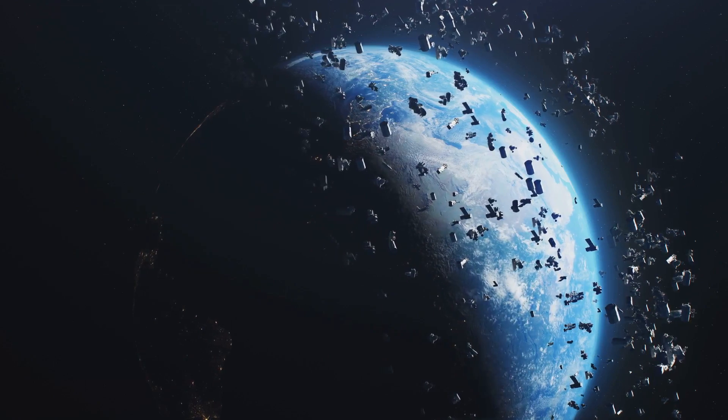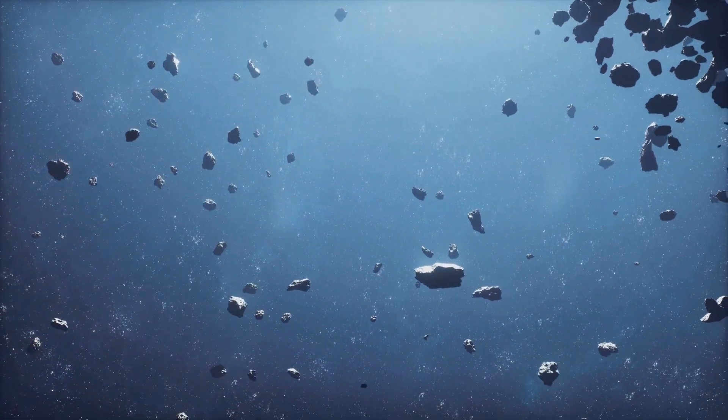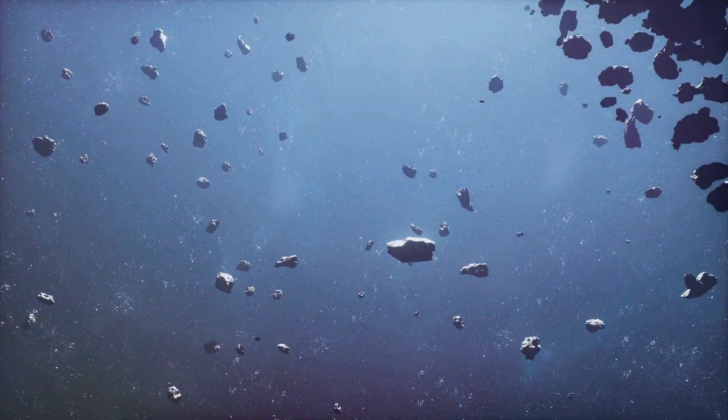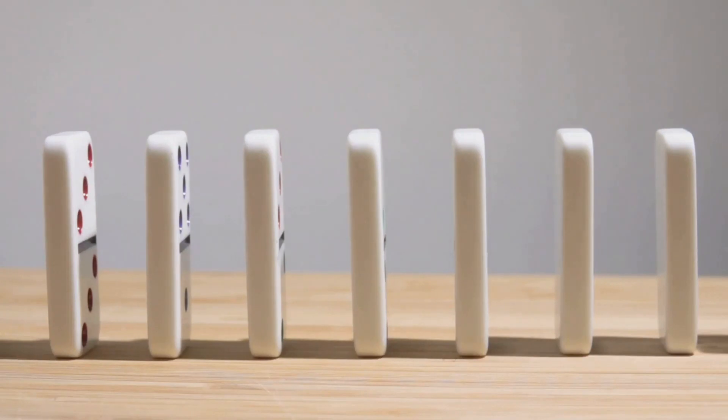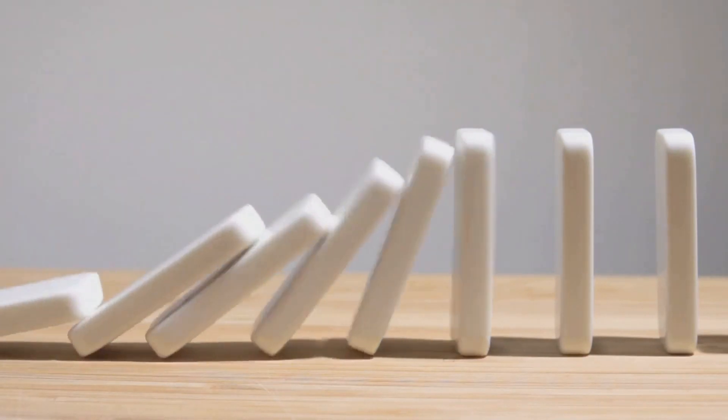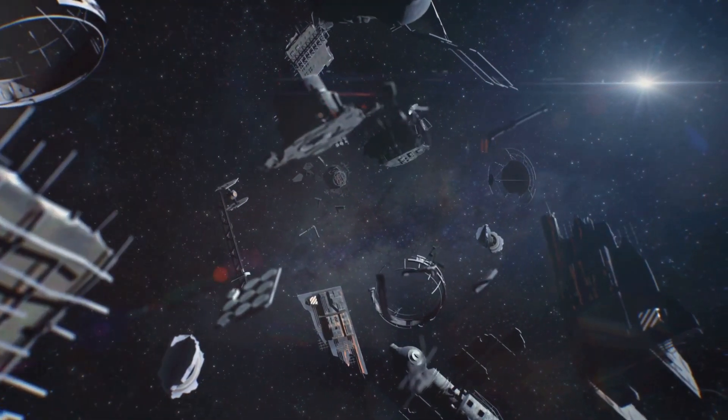It transforms into a swarm of high-speed projectiles. Each fragment, in turn, has the potential to collide with other satellites or pieces of space debris, leading to more fragmentation. This is the domino effect of space debris, a self-sustaining chain reaction that could rapidly increase the density of debris in orbit.